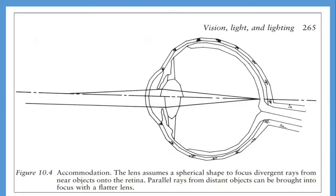Most visual problems due to optical causes can be successfully corrected using appropriate lenses. When viewing a distant object, incident light rays are approximately parallel, refracted by the cornea and lens to produce an image on the retina. Any object more than about 6 meters away can be considered to be at infinity. In young people, the refractive power of the lens can increase from 15 to about 29 diopters to bring close objects into focus, giving about 14 diopters of accommodation.